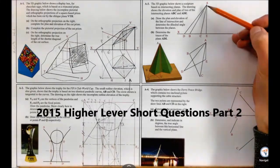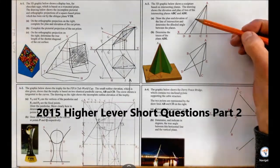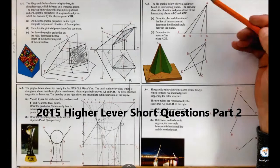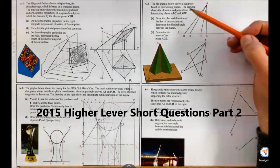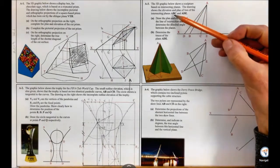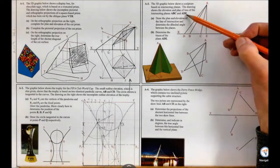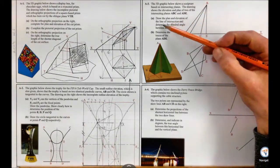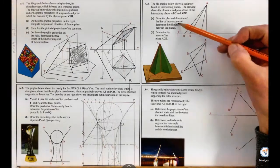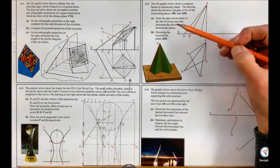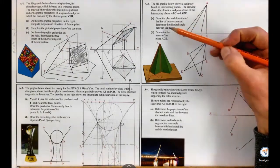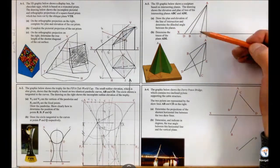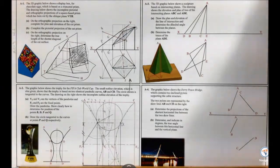A3 higher level short question. We're dealing with an intersecting planes question. We have two planes ABC and ADE. We have to draw the plan and elevation of the line of intersection and determine the dihedral angle between the planes, so we don't have the line of intersection.